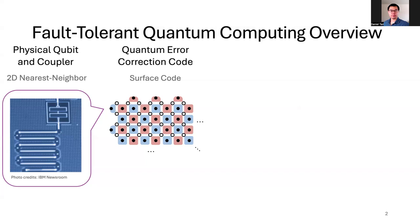The data qubits hold the quantum information we're computing with. The ancilla qubits measure what we call stabilizers of the surface code. In this paper we use the color coding RGB to XYZ — so red means X. For example, this red face is a four-body X stabilizer, meaning the ancilla qubit interacts with four neighboring data qubits, and the measurement result is the parity of four X operators. Blue means Z, and this ancilla qubit is measuring a two-body Z operator on two qubits.